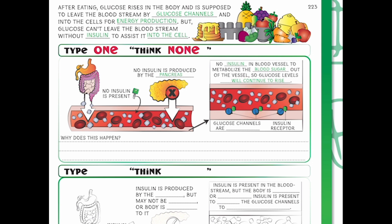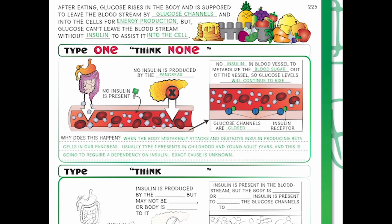Why exactly does this happen? The body mistakenly attacks and destroys insulin-producing beta cells in the pancreas. Type 1 usually presents in childhood and young adult years, and this requires a dependency on insulin. The exact cause is unknown. This goes back to type 1 — think 'none' — because we don't have any insulin in that bloodstream.